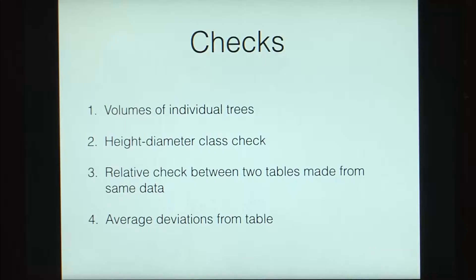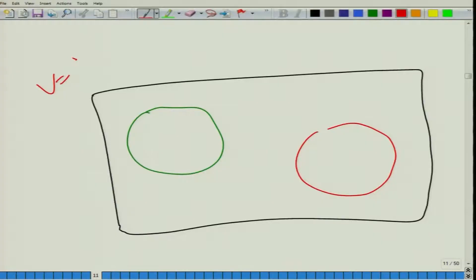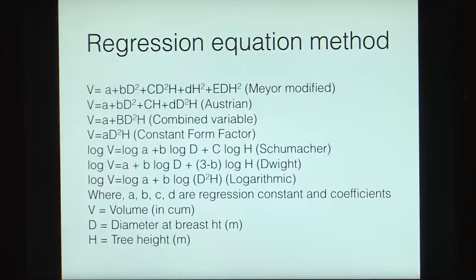We also need to check the average deviations from the table — deviations for each tree from the final table will also be checked. That is the first way of calculating a general volume table.